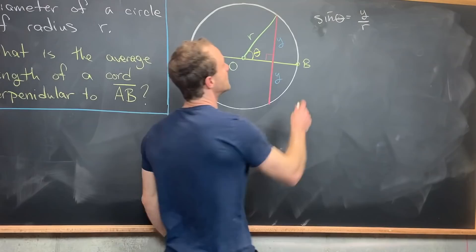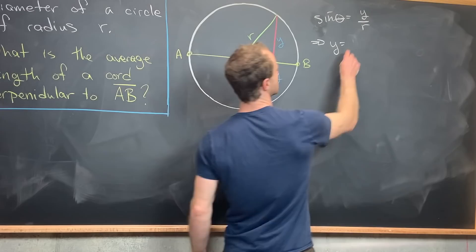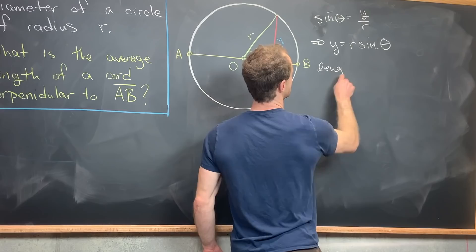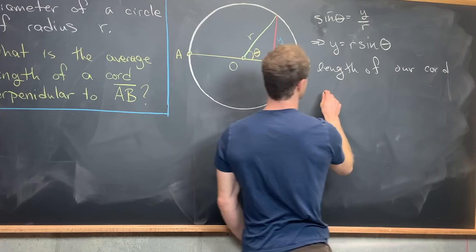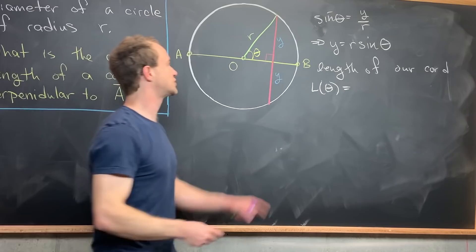So in other words, we have Y, which is the unknown bit, equals R times sine theta. So the length of our chord is given by, maybe we'll call it L(θ). And that's going to be 2 times Y or 2 times R times sine theta.